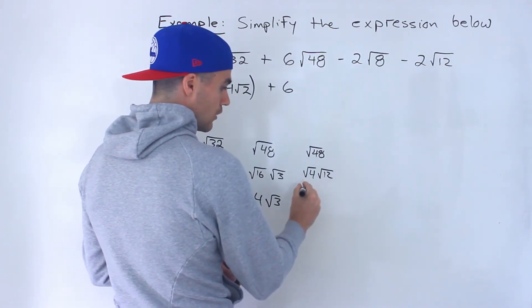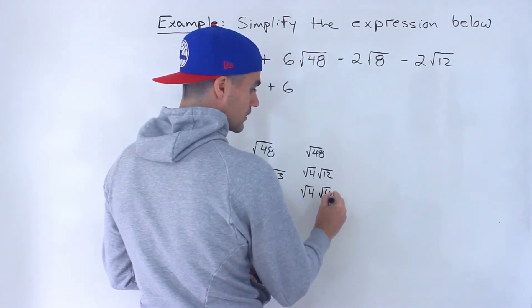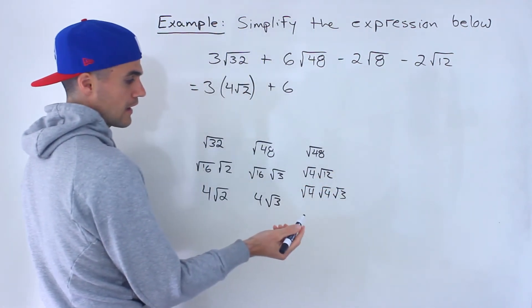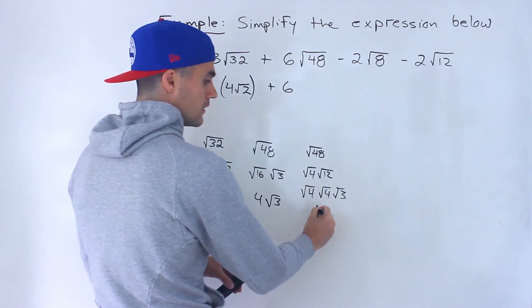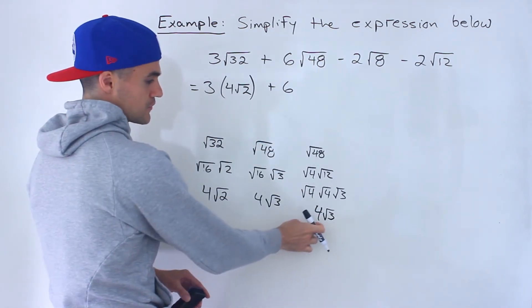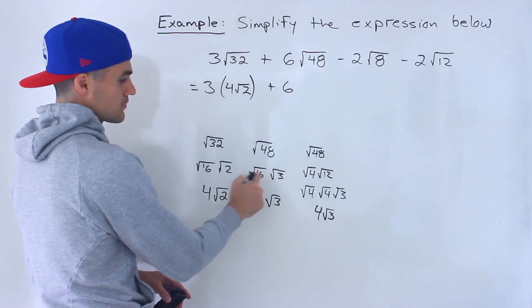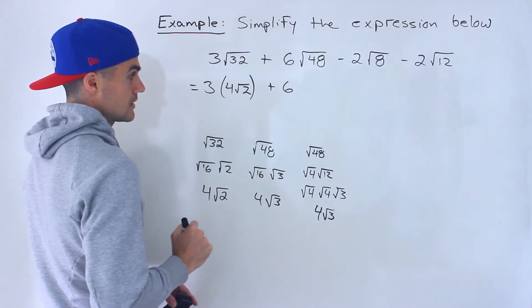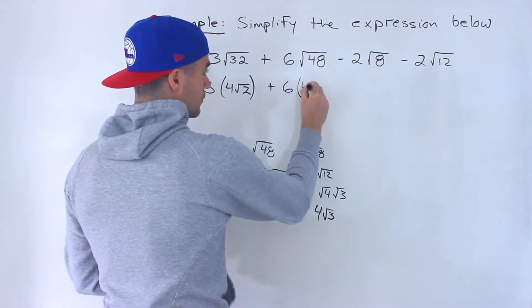And then notice that the root 12, we can simplify that to root 4 times root 3, like that. And notice root 4 is 2, root 4 is 2, 2 times 2 is 4. We end up with 4 root 3. So sometimes it may take a couple of steps for you to get to that simplified expression. Here, I just went directly to root 16. So root 48 is 4 root 3.